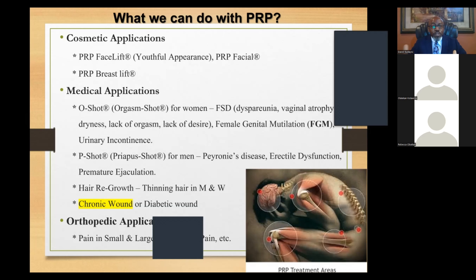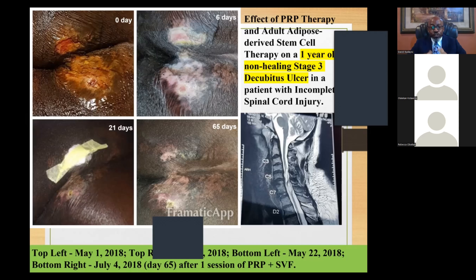Another medical application is hair regrowth. If hair thinning is due to thyroid issues, correct the thyroid function first, then use PRP to promote follicle growth. Diabetic wounds and chronic wounds that will not heal can have the healing process accelerated with PRP. Orthopedic applications are large — doctors love it. For people with pain in small, medium, or large joints, neck, or back, you can use PRP to remove or lessen those pains.